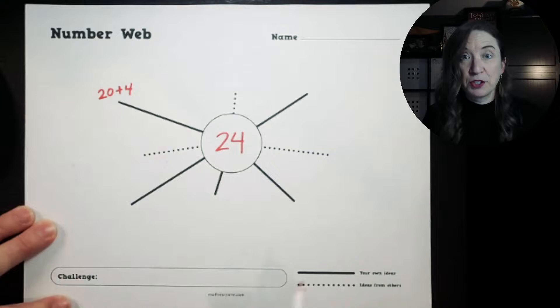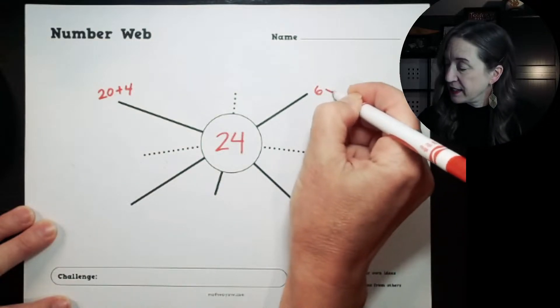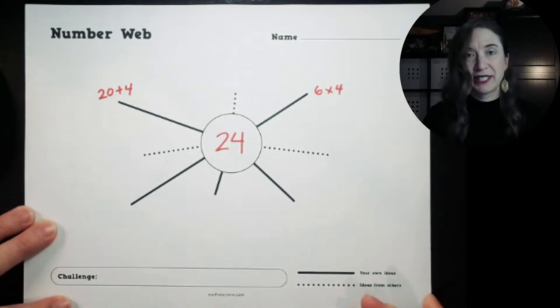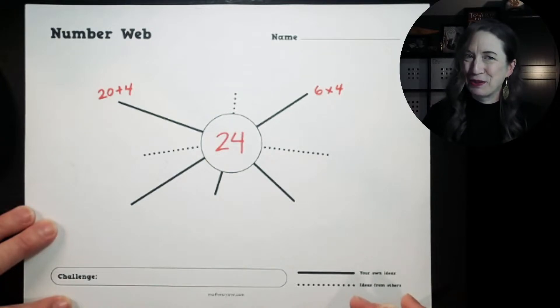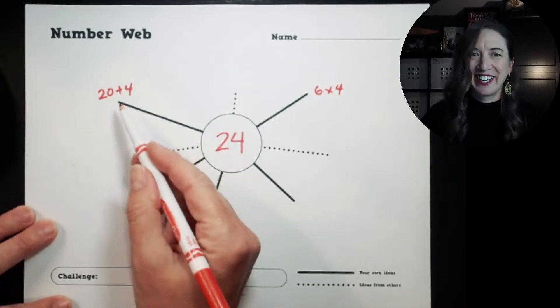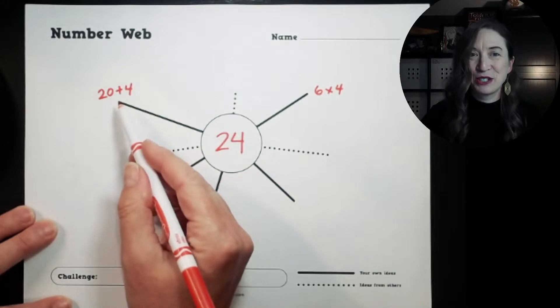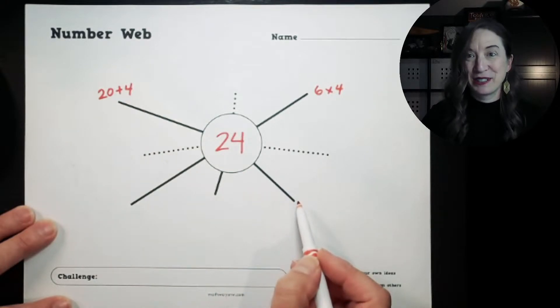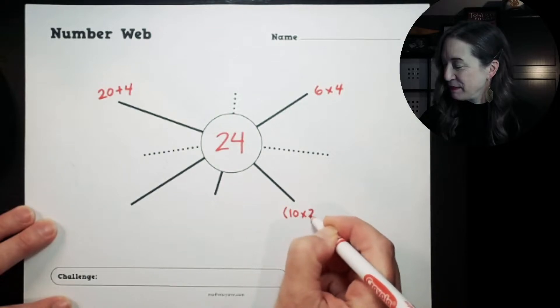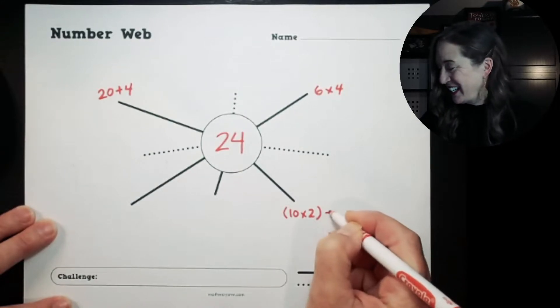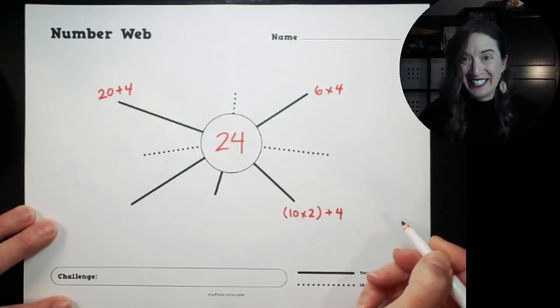I might use my knowledge of multiplication to write 6 times 4 over here because I know that's 24. I do like multiplication and I like this form, so I'm going to take this one, 20 plus 4, and I'm going to write it out as a multiplication expression. I'm going to say 10 times 2 because I know that's 20, and I can add 4 to that.